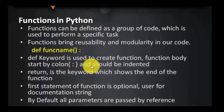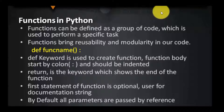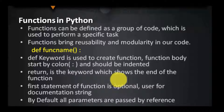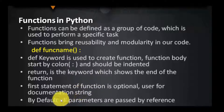All the statements inside the function body must start from the same point — we are going to follow indentation. If we want to return some value from the function, we use the return keyword. The first statement in a function is always optional and is treated as a documentation string — it will not execute, it is for information purposes. By default, all the parameters passed in functions are by reference, meaning if I change the value in that parameter, the original value will also change.